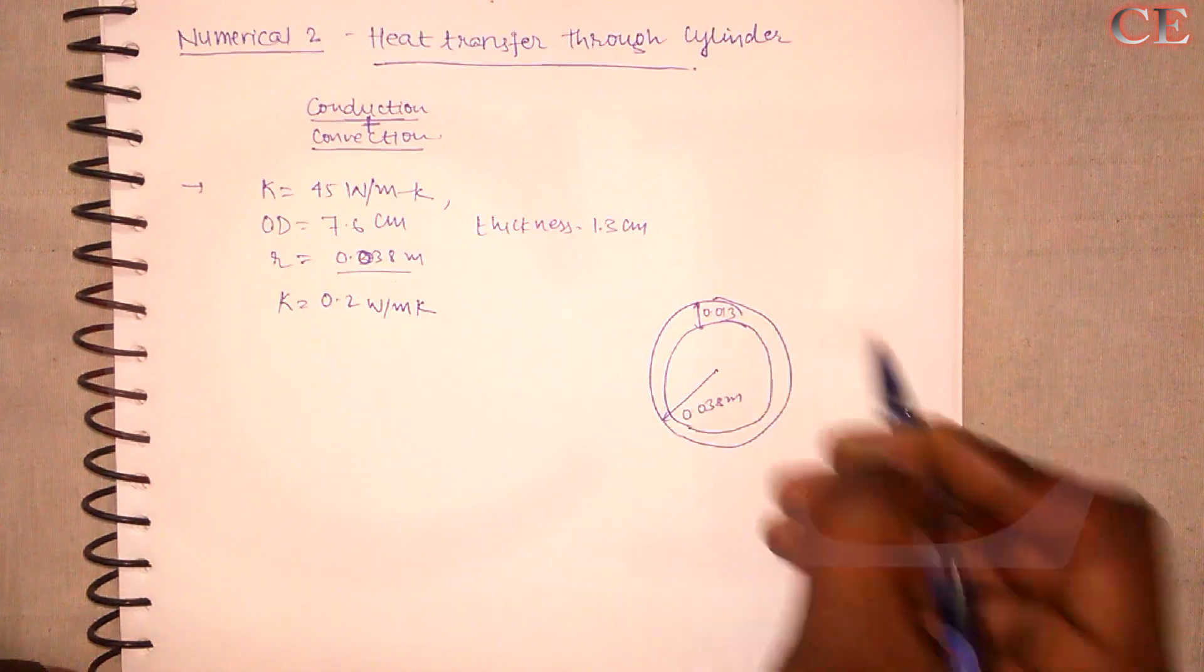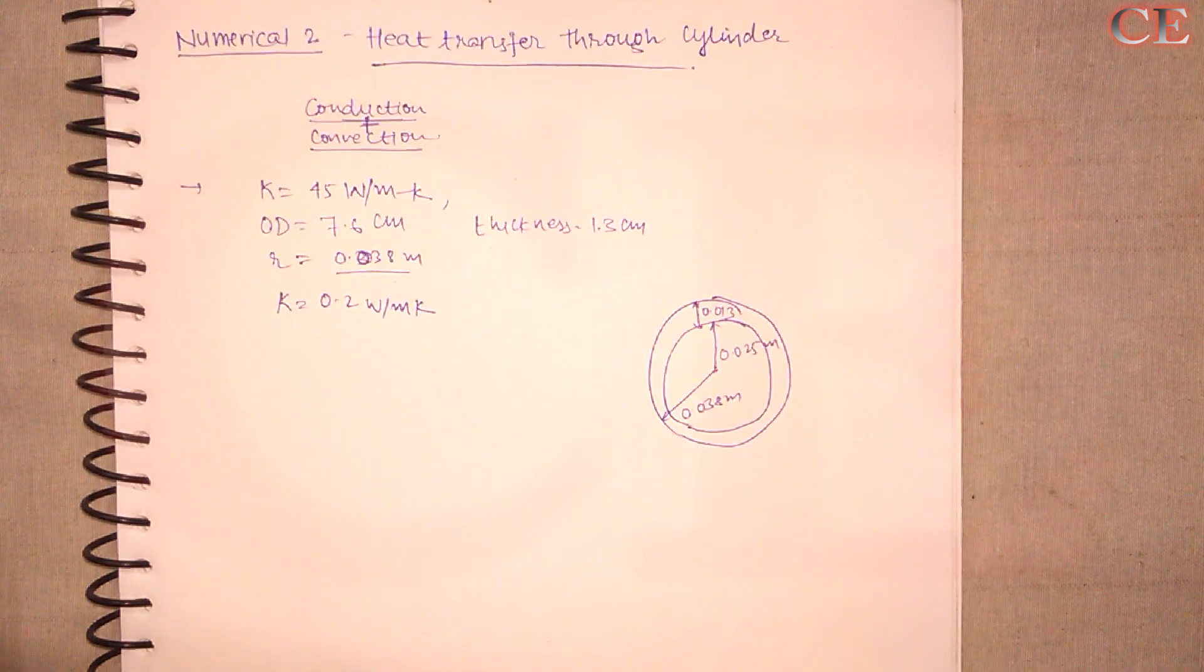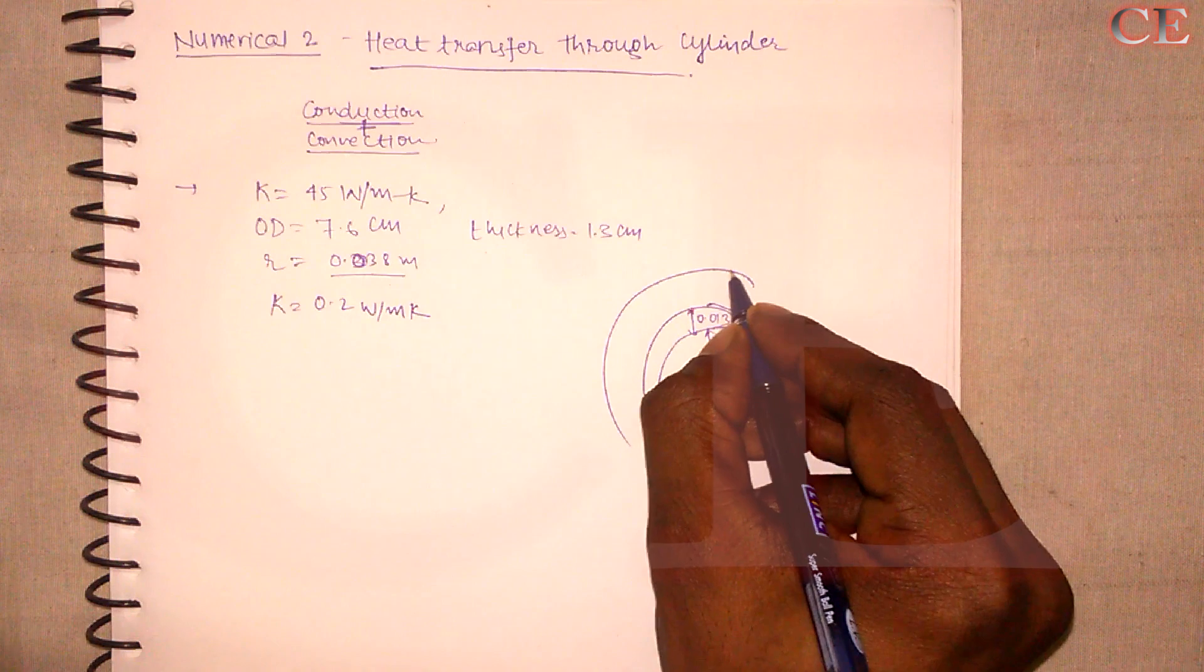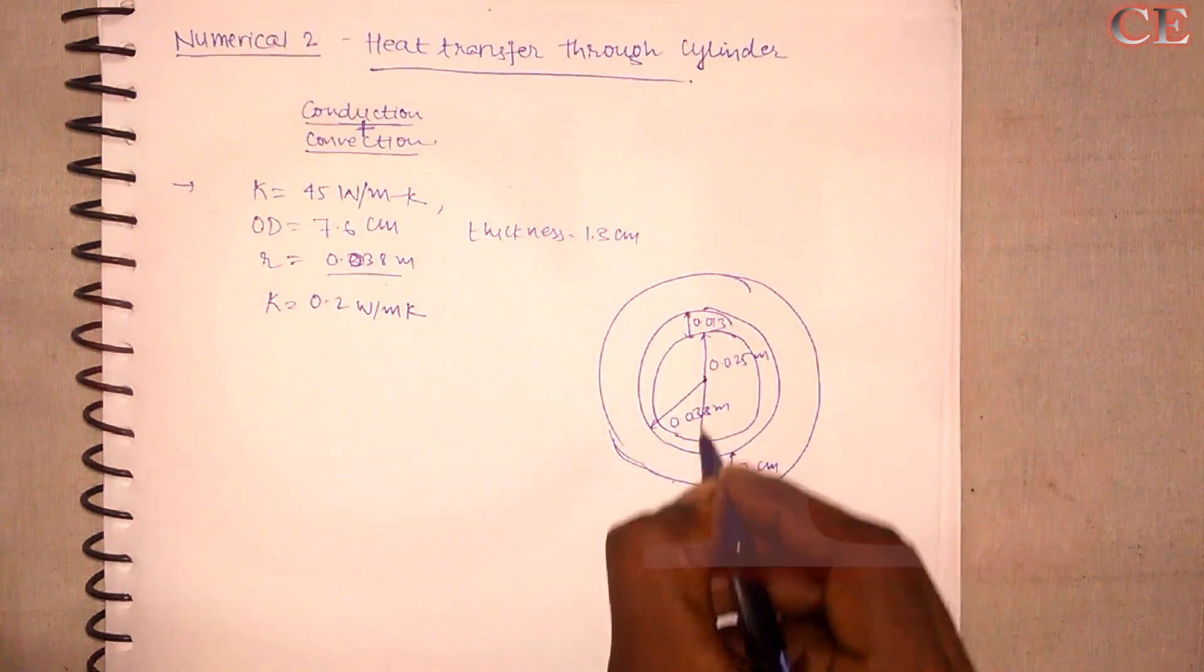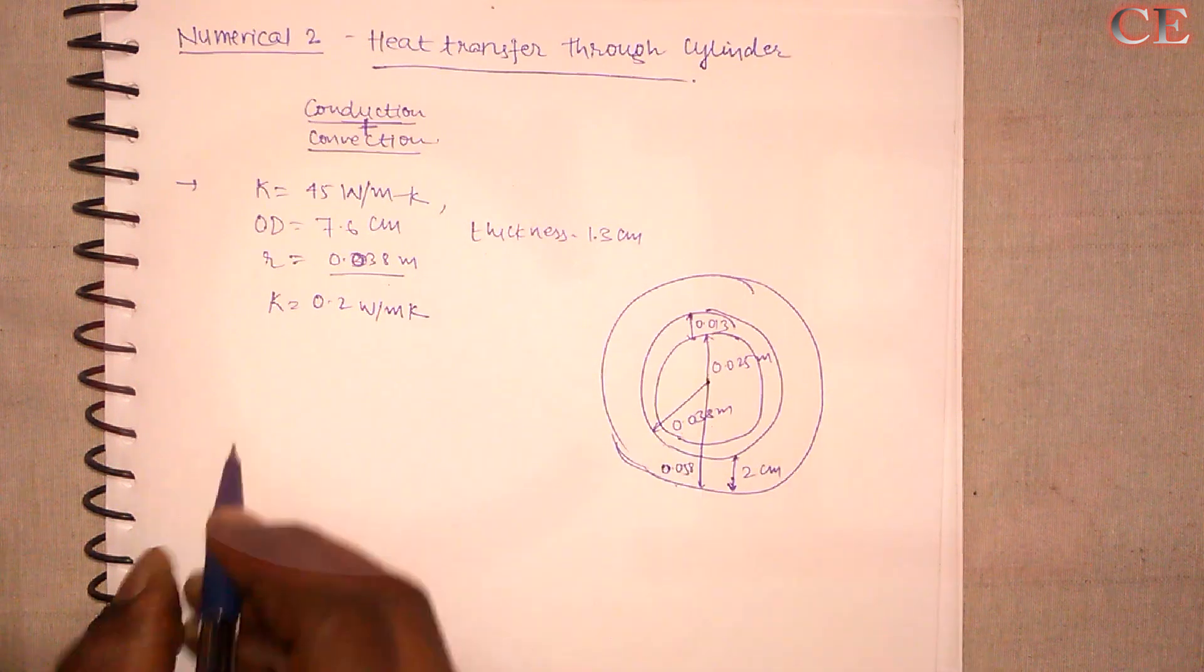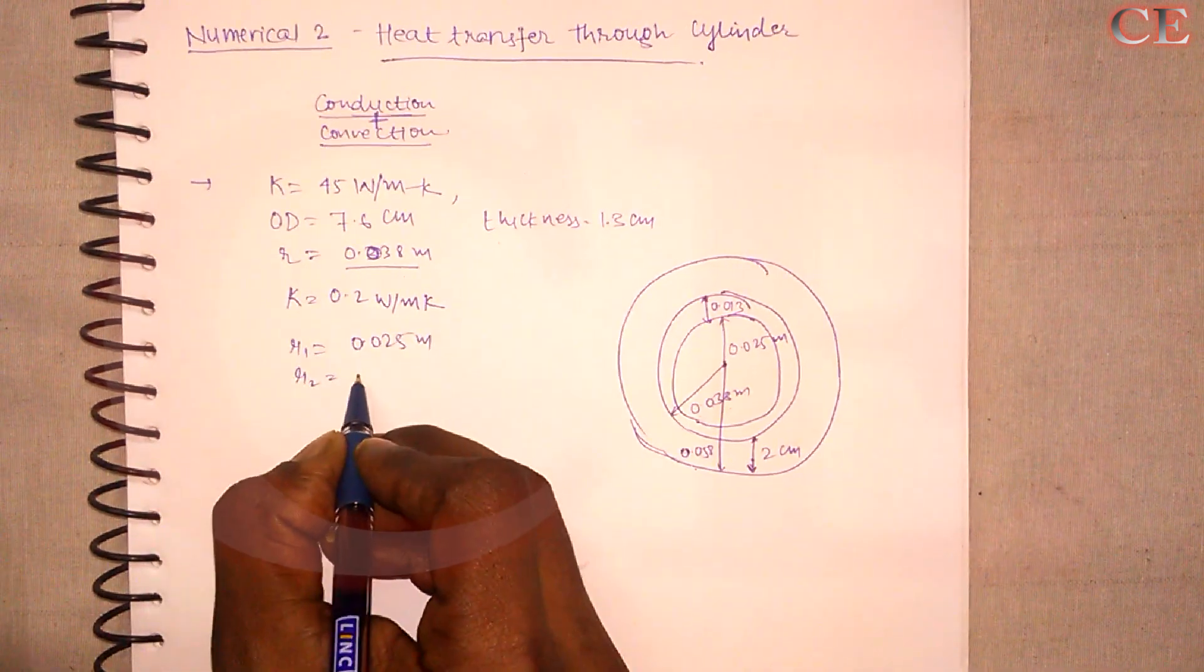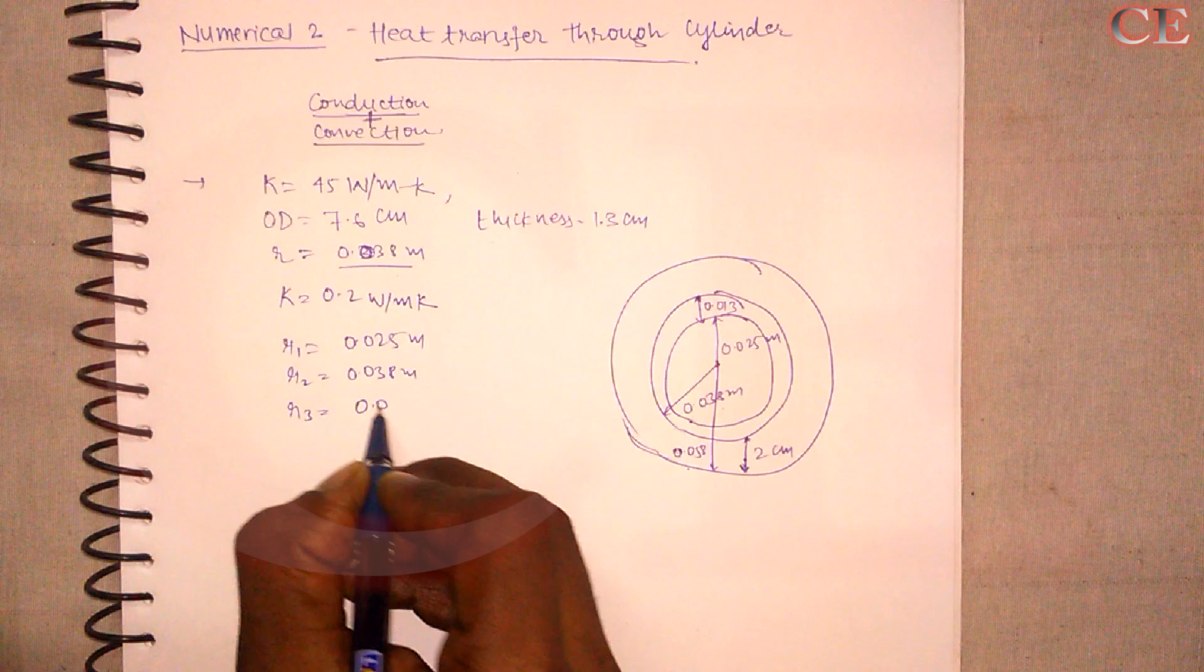So let us first of all draw the steel tube. So this is a steel tube which has a radius of 0.038 meters. And it has a thickness of 0.013 meter. So that would be 0.013 meters. So the inner radius would be, after subtracting from this, we will obtain it as 0.025 meters. Now, it is covered with an insulating material which has a thickness of 2 centimeters. So it is insulated by this. And this is 2 centimeters. So the radius would be 0.038 plus 0.02. That would be equal to 0.058.